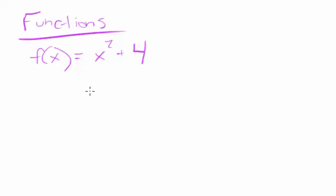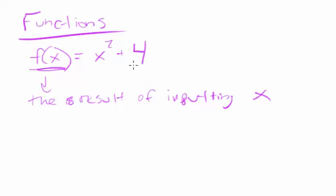And we a lot of times want to think of it like an input and an output. If we literally translate it, this means the result, f of x is kind of like the result of putting in x. So the result of inputting x into the function, that's f of x, and we know that this equals x squared plus 4.